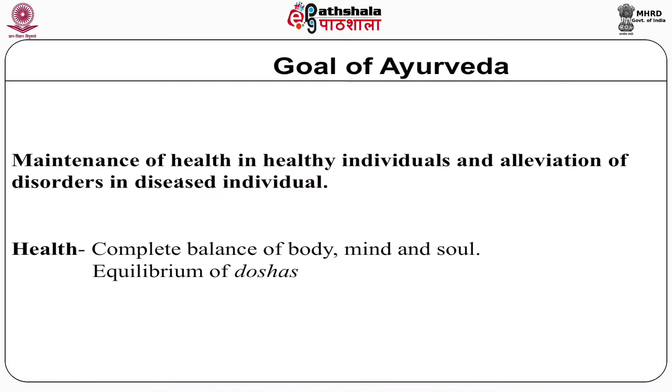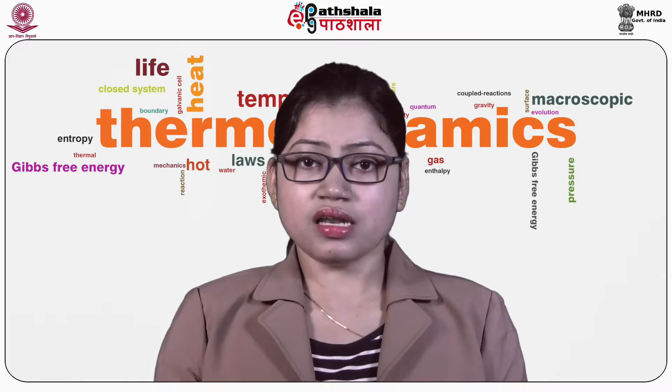Before going on to the topic, let us revise what we have learnt in the previous module. The goal of Ayurveda is maintenance of health in healthy individuals and alleviation of disorder in diseased individuals. Ayurveda is distinctly different from biomedicine as it does not adopt a structural view; rather it considers life as a complex interrelationship of Tridosa — that is the vata, pitta and kapha — and it adopts a distinct approach in dealing with the human body in an integrated and holistic way. Ayurveda defines health as a state of physical, psychological, social and spiritual well-being.